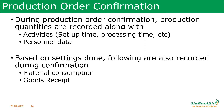Now that we have issued the material, we have to enter what production was done — this is called production order confirmation. In production order confirmation, production quantities are recorded along with other activities like setup time, processing time, personnel data, and how much time was spent. Also, material consumption through back flush can happen automatically, and goods receipt from the production order can also be done automatically during order confirmation.